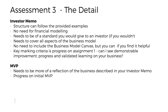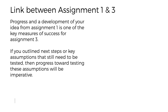The MVP for the next phase needs to be more of a reflection of your actual business. If it's a content-led business there needs to be content in there that would reflect what that business is actually trying to do in market. Progress on the initial MVP is important — the MVP should be a reflection of the learning that you've managed to translate in your investor memo. If in your first assignment you outlined next steps or key assumptions that still needed to be tested, then progress towards testing those assumptions should be your imperative — I should be able to see you've made progress towards some form of validation.